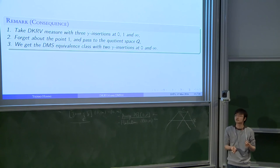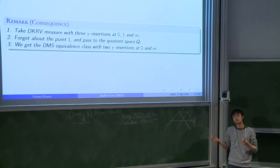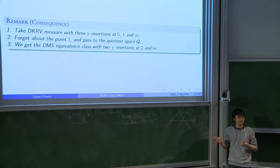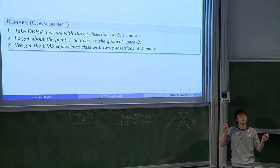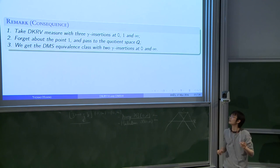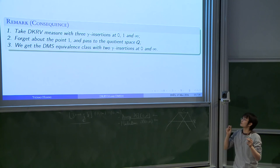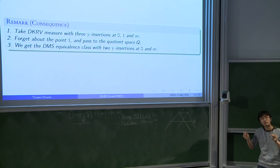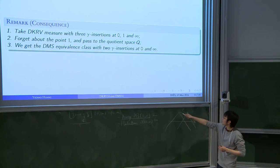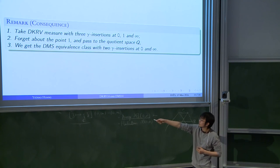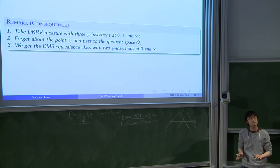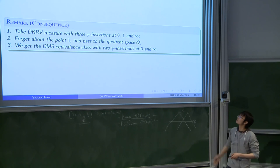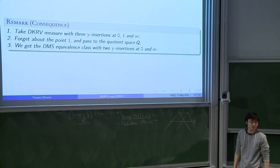A consequence of this theorem that you just saw, from passing from two points to three points, is that you take these three points with insertion points at zero, one, and infinity. You take away one of those points. So you forget about the fact that I have one point at zero. You just say that I have two points at one and infinity. You forget about one point. You apply this kind of lateral shift, or you apply this action to your measure so that you pass to the equivalence class, and then you get the equivalence measure of the two-point construction.